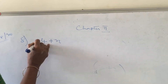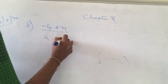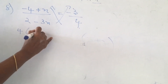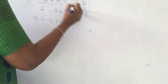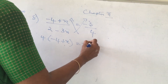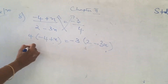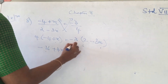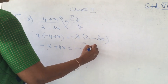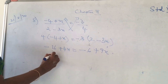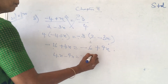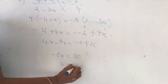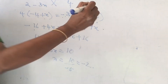Next: minus 4 plus x divided by 2 minus 3x is equal to minus 3 by 4. Cross multiply: 4 into minus 4 plus x gives minus 16 plus 4x; minus 3 into 2 minus 3x gives minus 6 plus 9x. So 4x minus 9x gives minus 5x; minus 6 plus 16 gives 10. x is equal to 10 divided by minus 5, that is equal to minus 2.